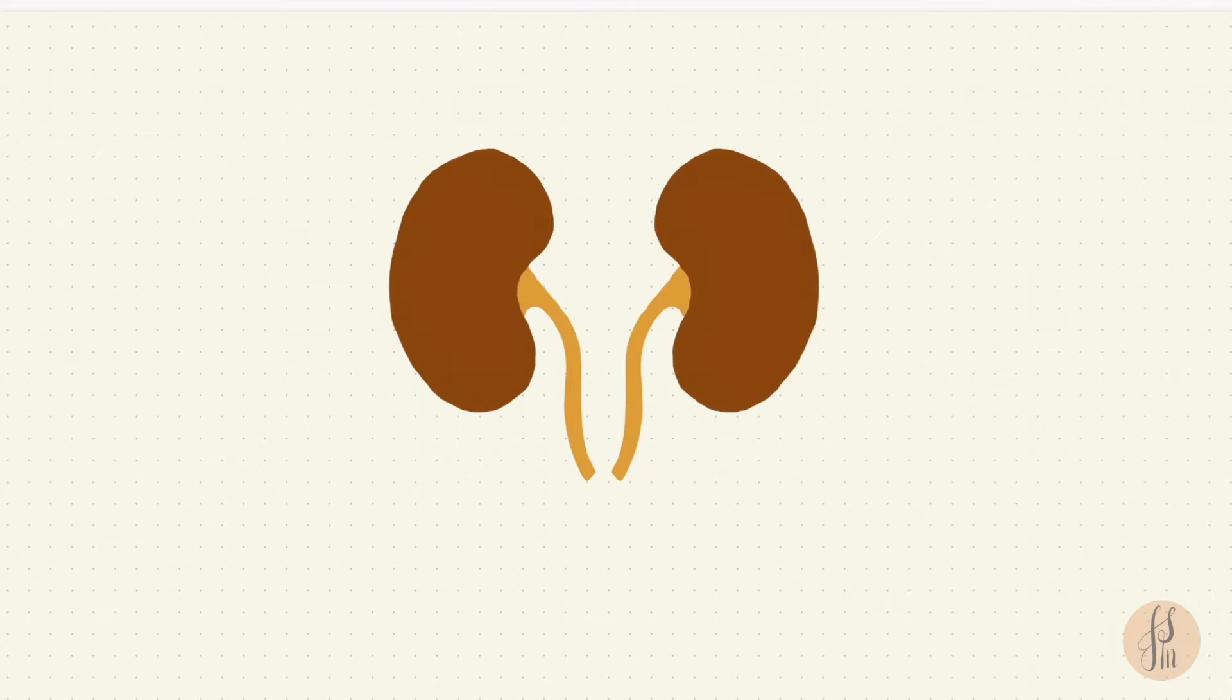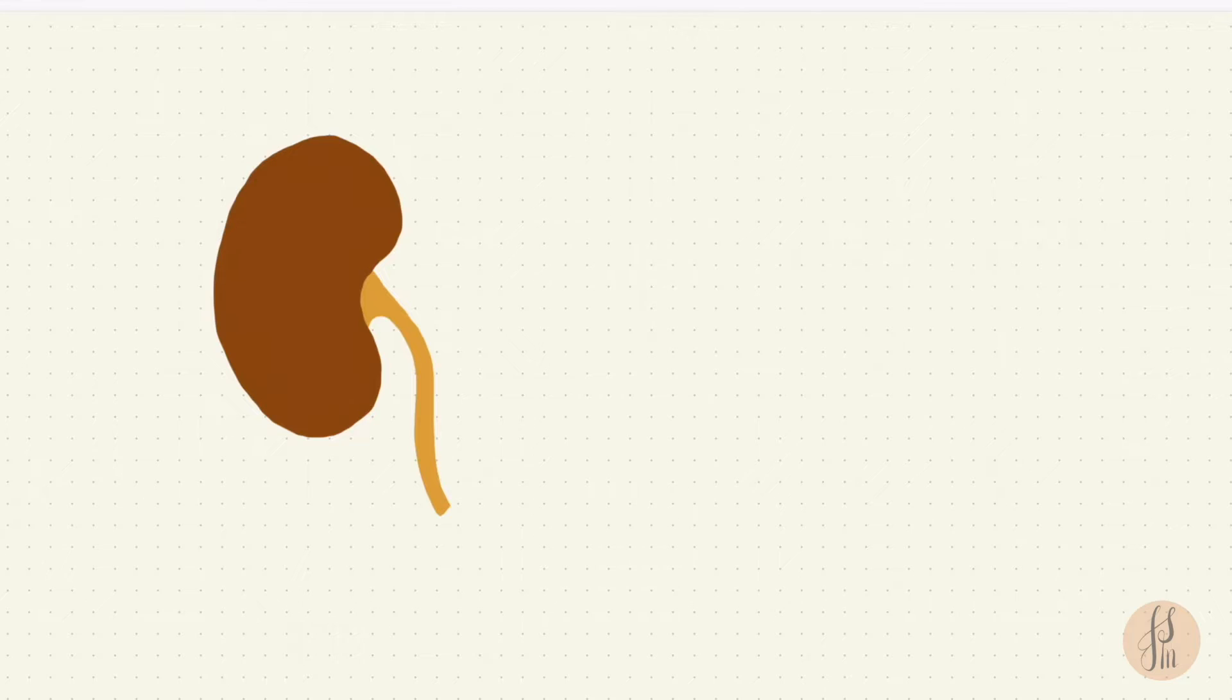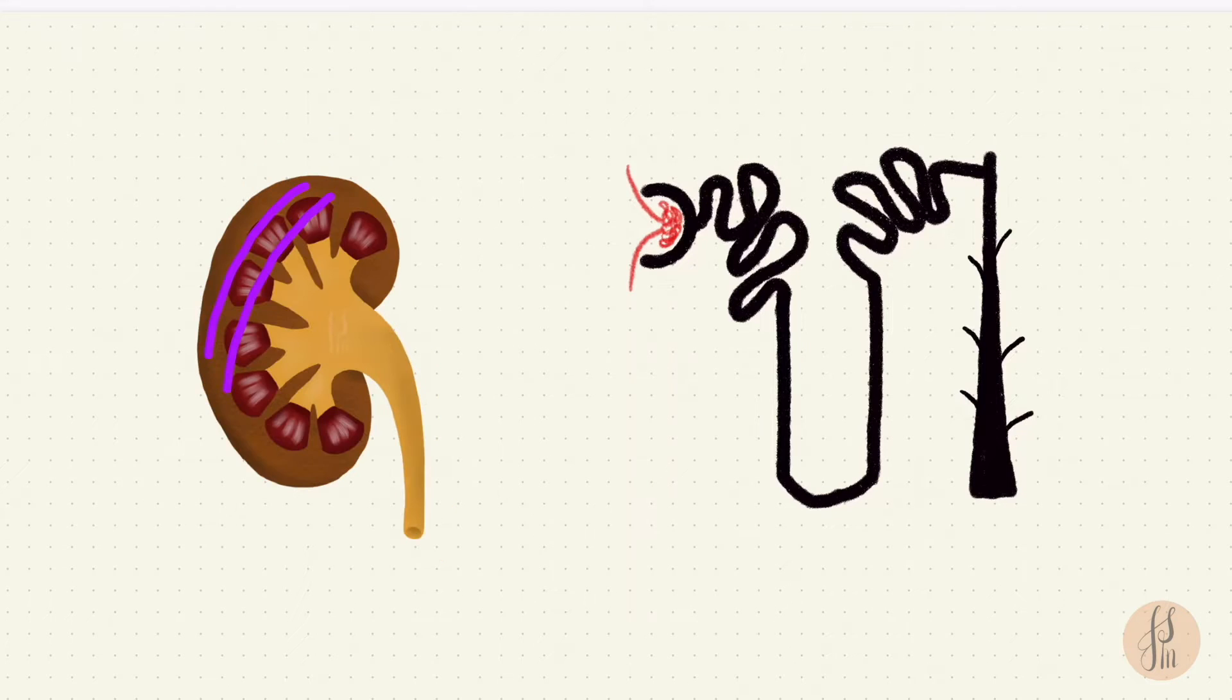First let's look at what we need to know in the anatomy and the structure. So there are two kidneys in the abdomen and each kidney has millions of nephrons. The kidneys have an excretory portion and a collecting portion.